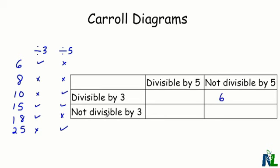Eight is not divisible by three and not divisible by five, so we're going to put it right here. Ten is not divisible by three, but it is divisible by five, so we're going to put it right here. Fifteen is divisible by both three and five, so it will go in this section of our Carroll diagram. Eighteen is divisible by three, but not divisible by five, so it will be in the same section as six.